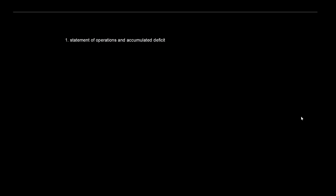The second statement is the statement of financial position, similar to the balance sheet in the private sector — a listing of all assets and liabilities. The big difference is that in the private sector you'd have an equity position for shareholders, which doesn't exist in the public sector. Third is the statement of change in net debt, essentially a summary of all factors affecting net debt. Fourth is the statement of cash flow — a reconciliation of changes in cash balances year on year.